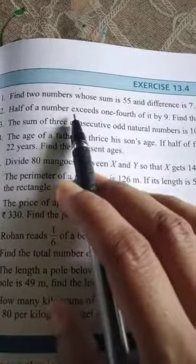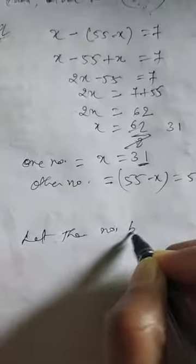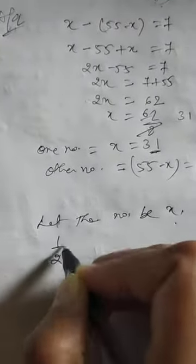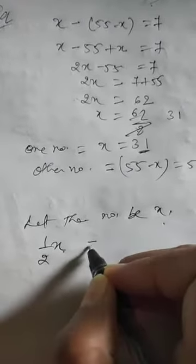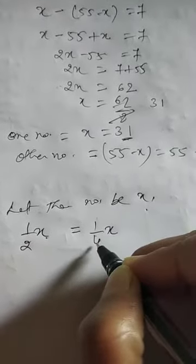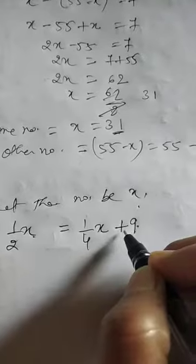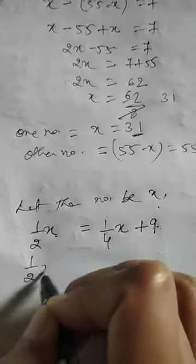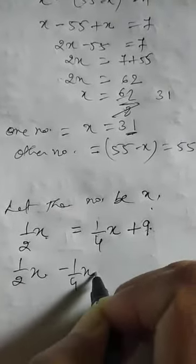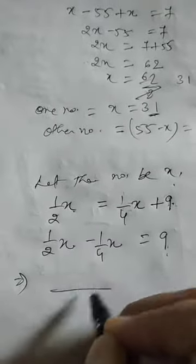We don't know what the number is, so let the number be x. Half of the number exceeds one-fourth of that number — exceed means increasing — by 9, so 9 will be added to it. Now to solve: 1/2 minus 1/4 comes to this side, and 9 remains on the other side. Take the LCM, which is 4.